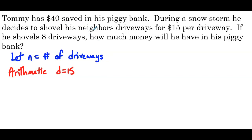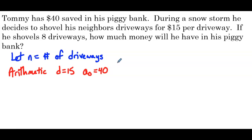That $40 — he has not shoveled any driveways, zero driveways. So n would be zero, and in subscript notation, a sub zero equals 40. We've seen a few sequences where this was the case, where we started at a sub zero, or the zeroth term. This is another example where it makes sense to start at the zero term, and then first term, second term, third term — because we define n to be the number of driveways. He has shoveled zero driveways to get that $40.